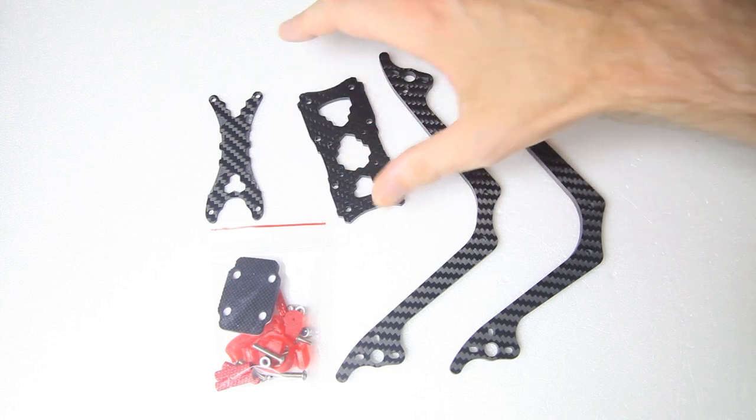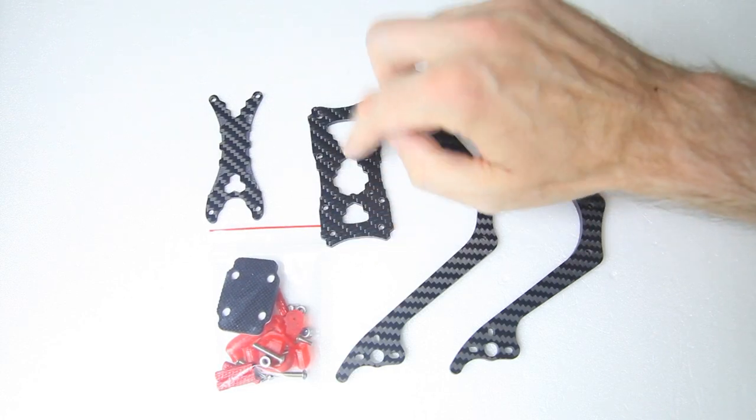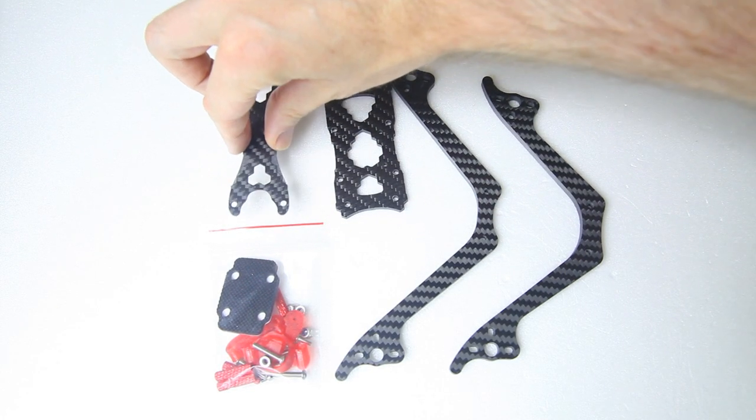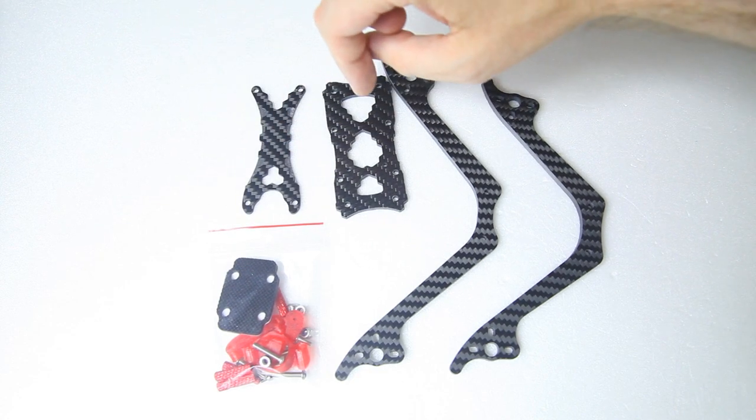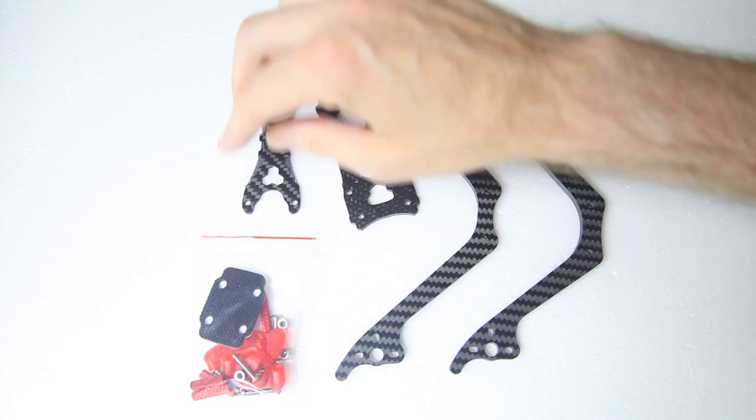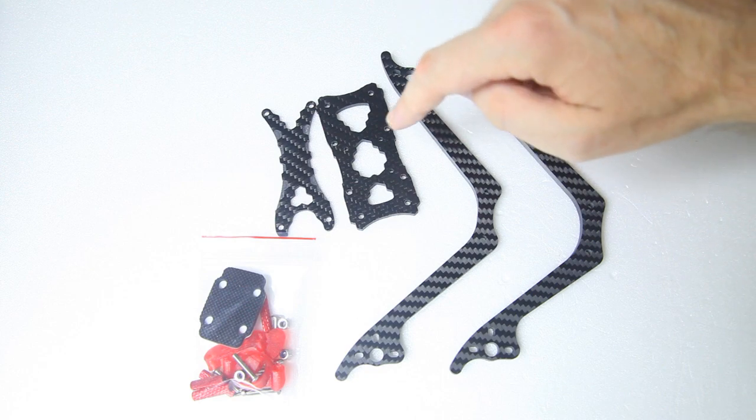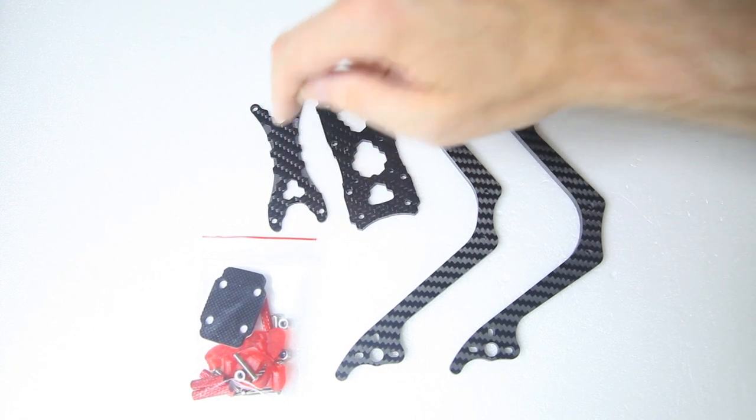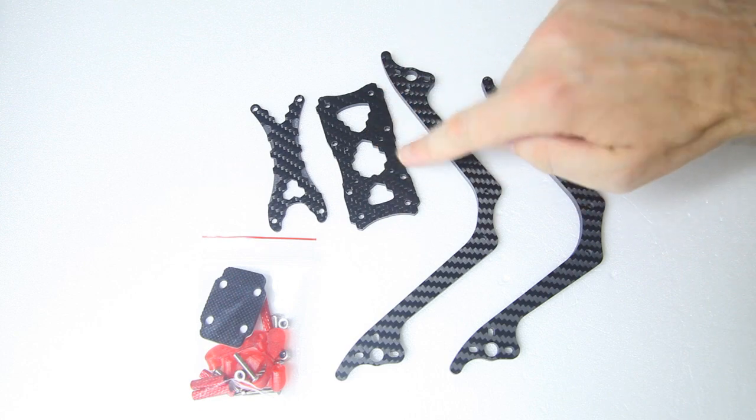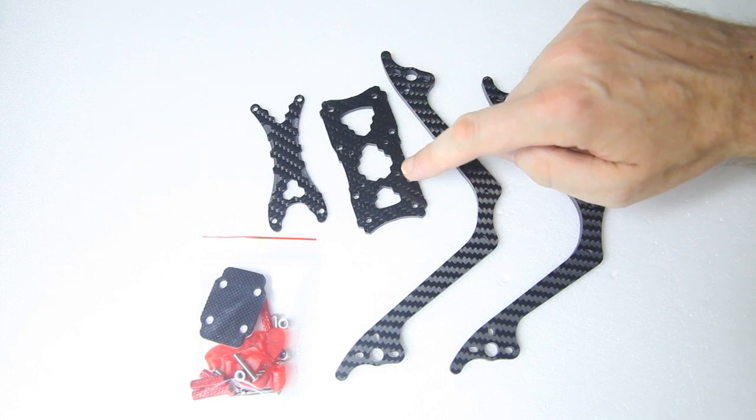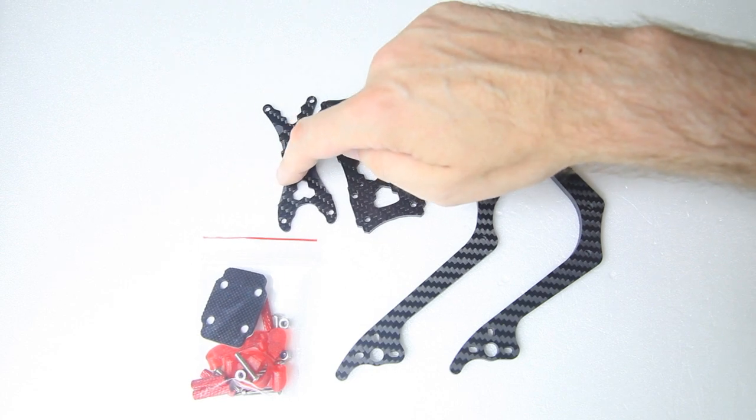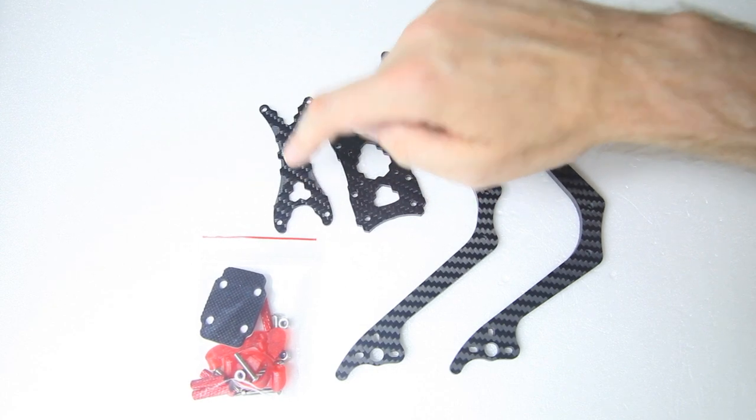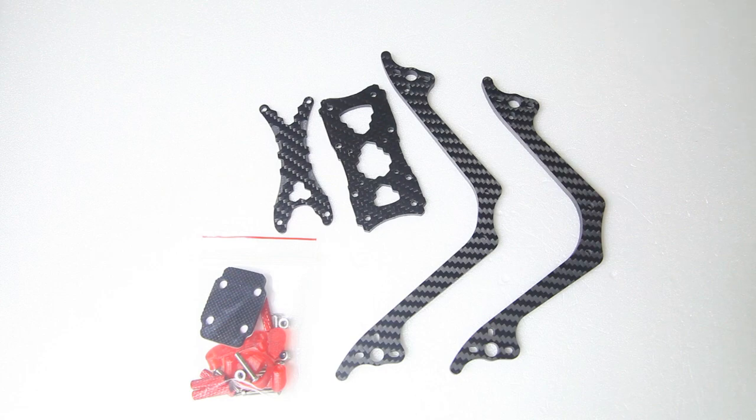The front two arms you see over here and these are the rear two arms. And besides that you've got a bottom plate, this is the bottom plate over here, and you've got a top plate. That is also different than in the Floss. The Floss has a bottom plate and a brace and then the top plate.